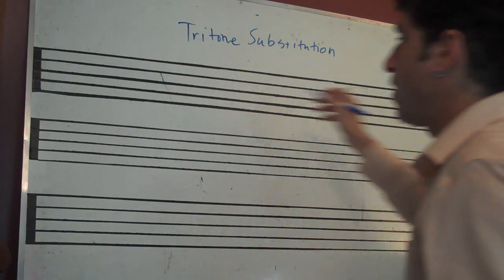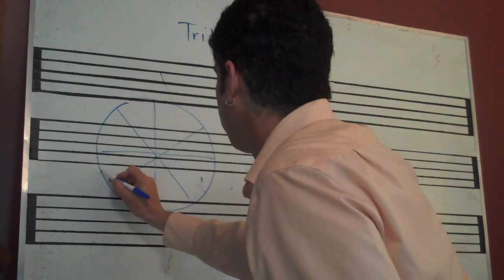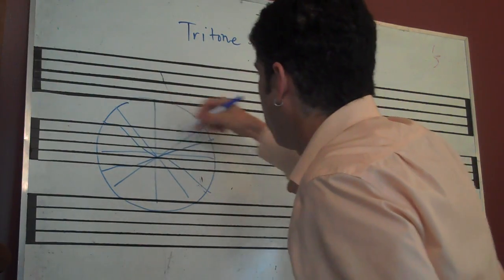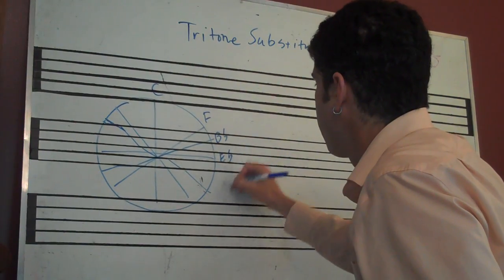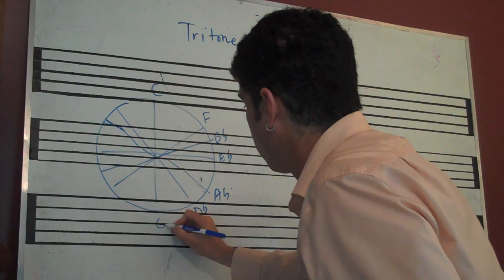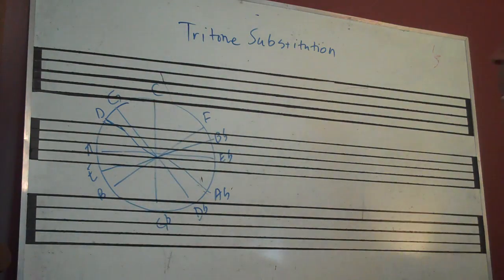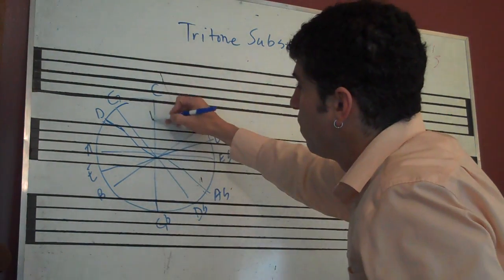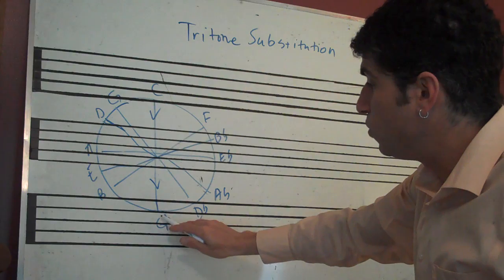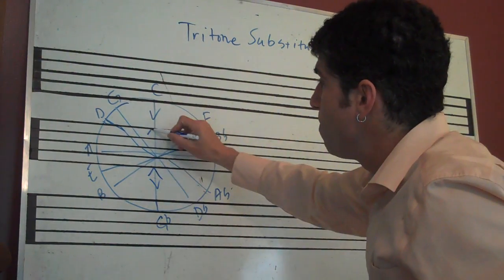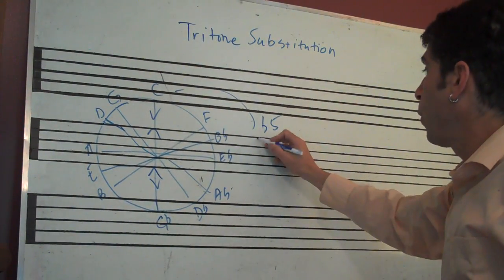Let's start out with our circle of fourths and fifths again. In the last video we discussed moving across from C to G flat or F sharp, and moving across the other way — these are both flat fives, or tritones.